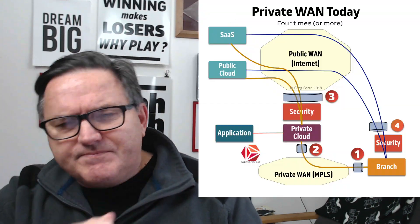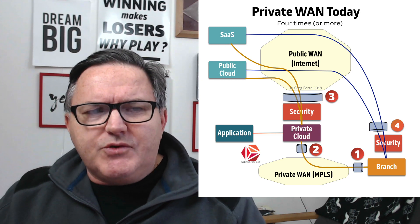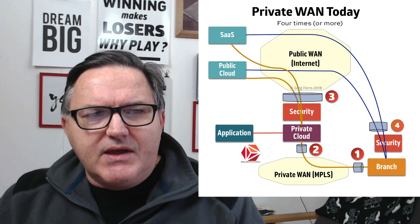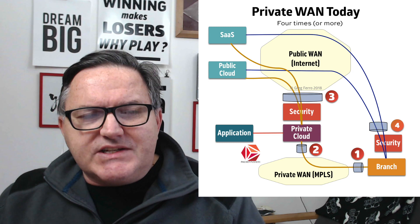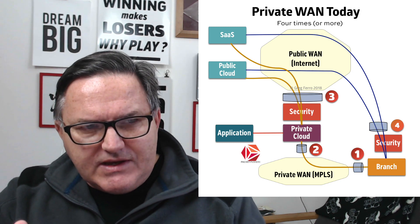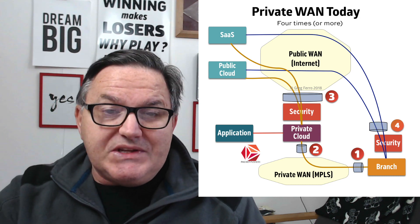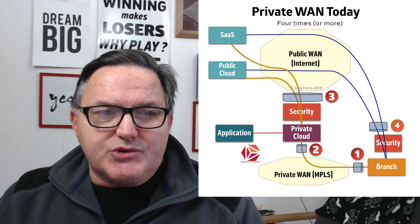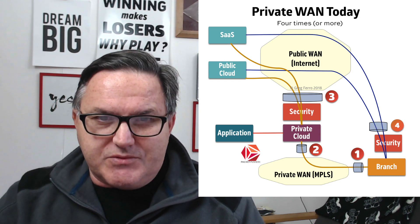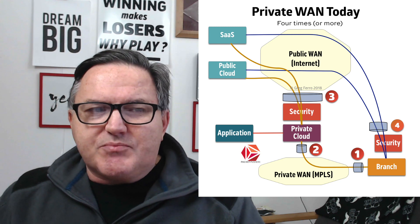So here's the thing. I did a diagram as I was thinking about this, and it's here, and it talks about the private WAN today. What you have is your branch here at point one, where the branch actually connects to some tail circuits, some private MPLS bandwidth, and then it goes down towards your private cloud over a private WAN, usually an MPLS service, to the private cloud. There are two lots of bandwidth there that you have to buy and manage individually.